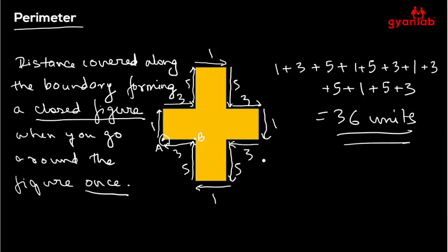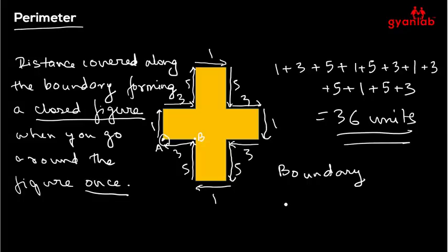If you want a real-life example of where you use perimeter: say you live in a house with a boundary wall — the length of that boundary wall can be found using perimeter. Or say farmers want to put boundary fencing around their entire farm; to calculate the amount of wire needed for the fencing, they would use the perimeter of their field.